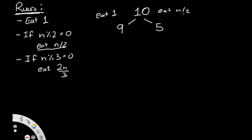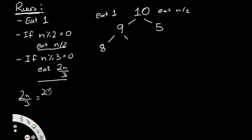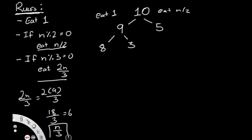We keep going until we reach zero. From 9: eating one leaves 8. Nine is not divisible by two, but it is divisible by three, so we can eat 2*(9/3) = 6 oranges, leaving us with 3 (which is just 9/3). From 5: five is not divisible by two or three, so we can only eat one, leaving 4.